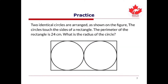Please try to solve this question. Two identical circles are arranged as shown on the screen. The circles touch the sides of a rectangle. The perimeter of the rectangle is 24 centimeters. What is the radius of the circle? Please pause the video and try it on your own.